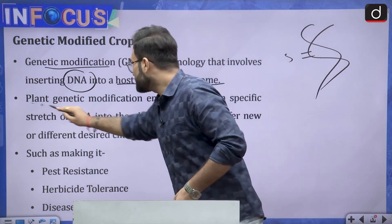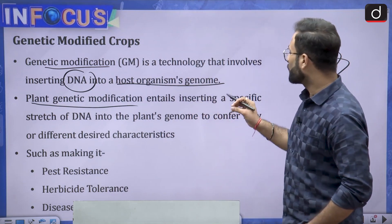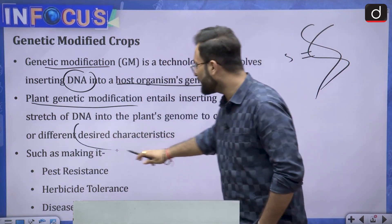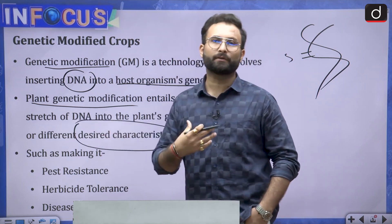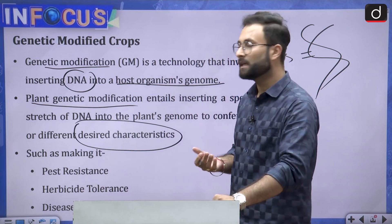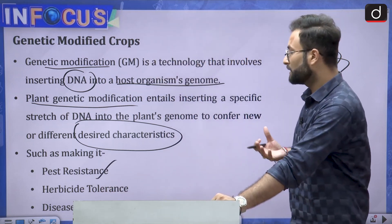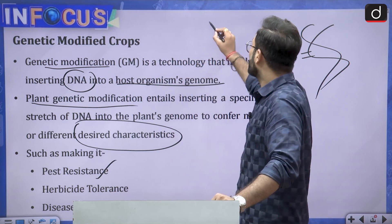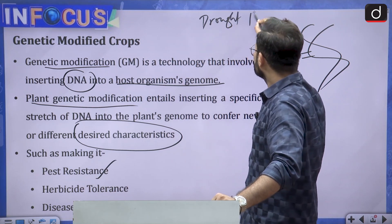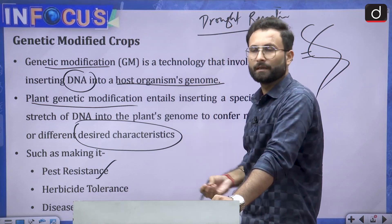Plant genetic modification entails inserting a specific stretch of DNA into the plant's genome to confer new or different desired characteristics. In a plant, these characteristics could include high-yielding variety, pest resistance, herbicide tolerance, or disease resistance — for example, varieties which are drought resistant. This is how we introduce a gene to achieve the desired trait.